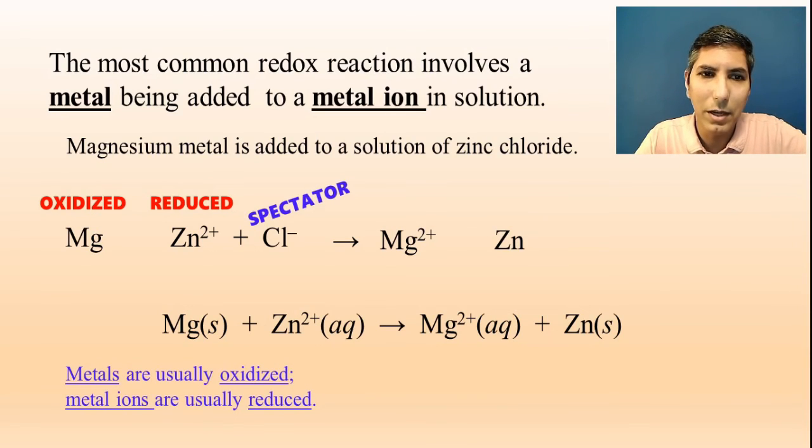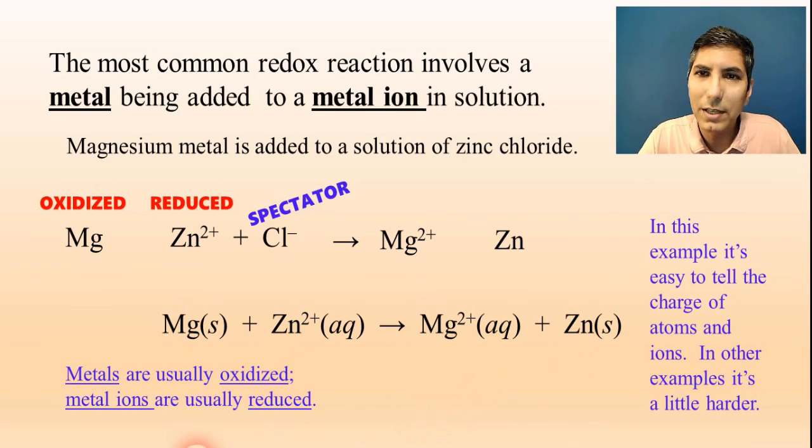Now, as you look at this redox reaction, it's fairly simple to isolate the charge that everything has. We know that zinc has a +2 charge, magnesium has a +2 charge. These elements, magnesium and zinc as metals, have zero charge. But as we go through some of these other examples, it's going to be a little harder to tell what the charge or the oxidation state, as we sometimes call it, of these species are. So what we're going to do is devote an entire video to how to determine oxidation state. That's going to be coming up in our next video.